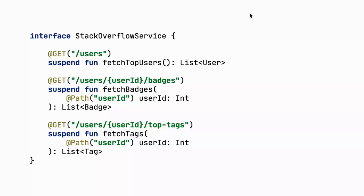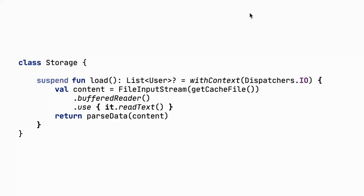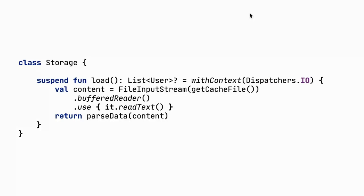If we are writing code that can't be executed on the main thread — for example, reading a file from the filesystem — we should make it main-safe ourselves. To do this, we add withContext(Dispatcher.IO) at the beginning of the method and define it as suspending. This ensures it executes on a coroutine, and we get a compilation error if we try to call it from a normal thread. The method will always run on an IO thread.